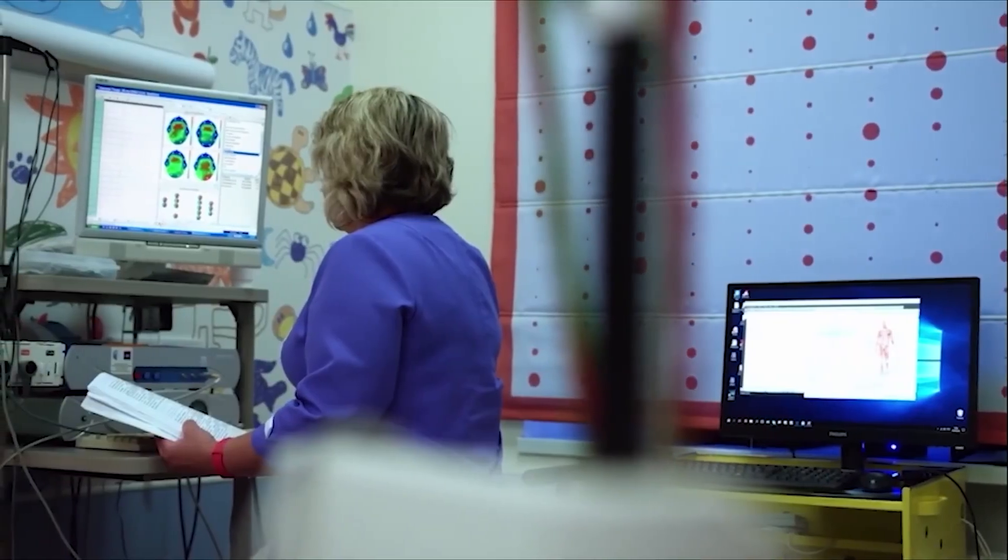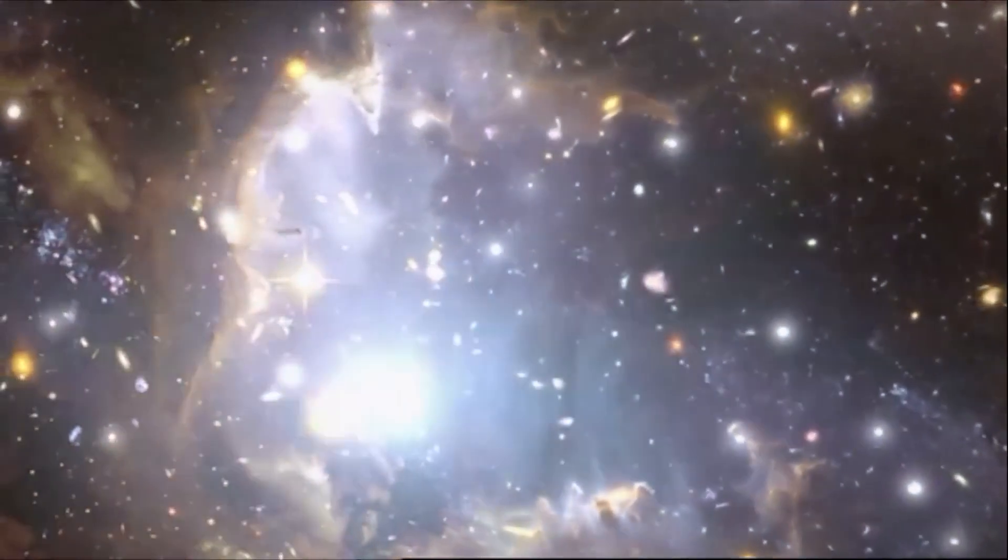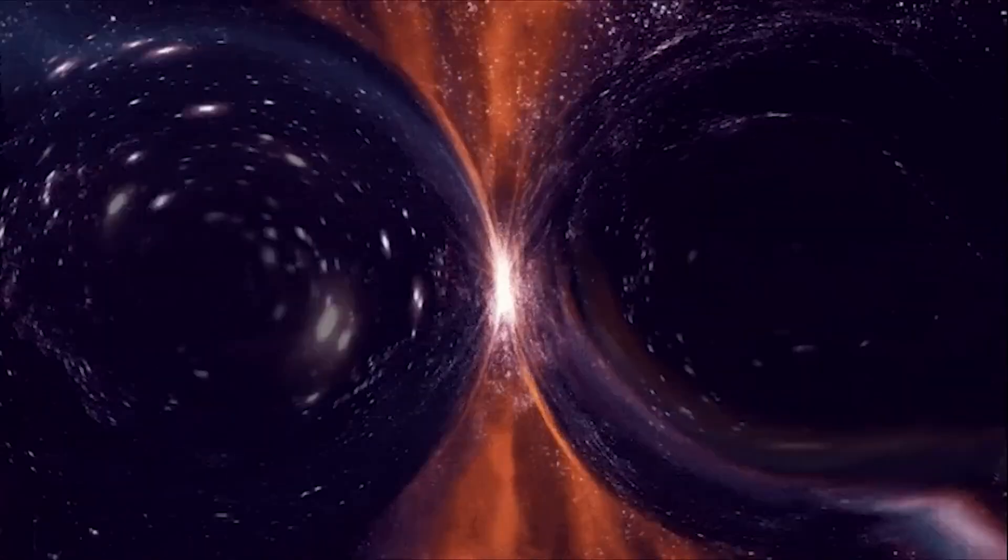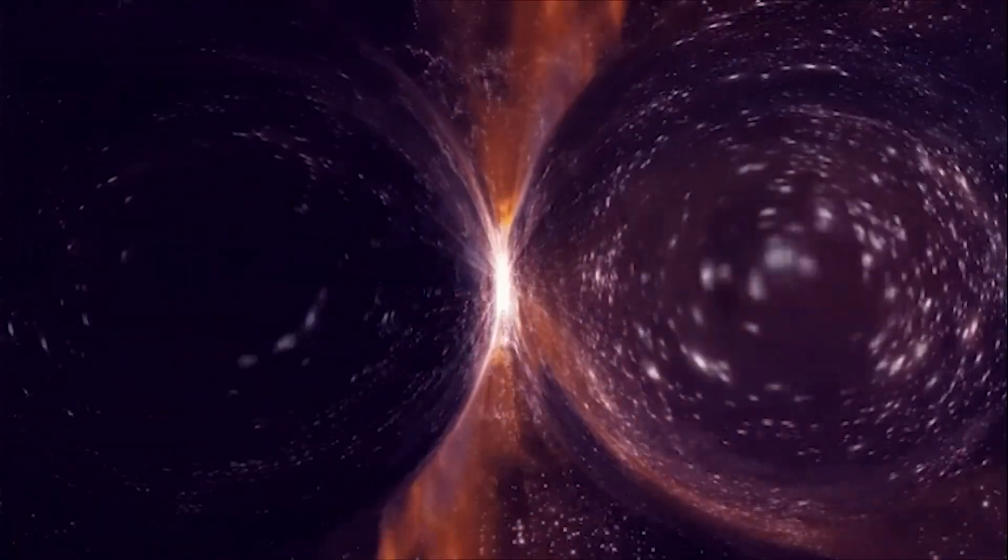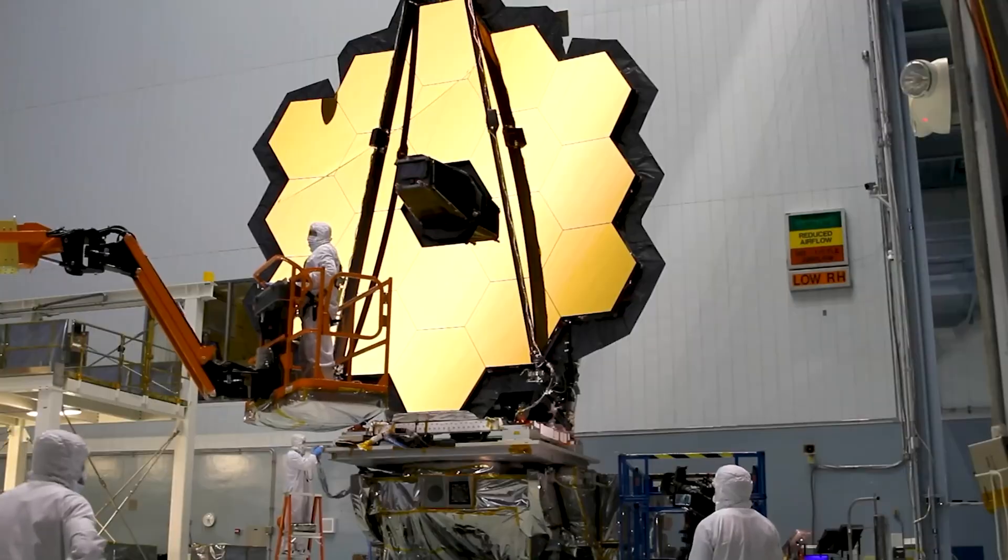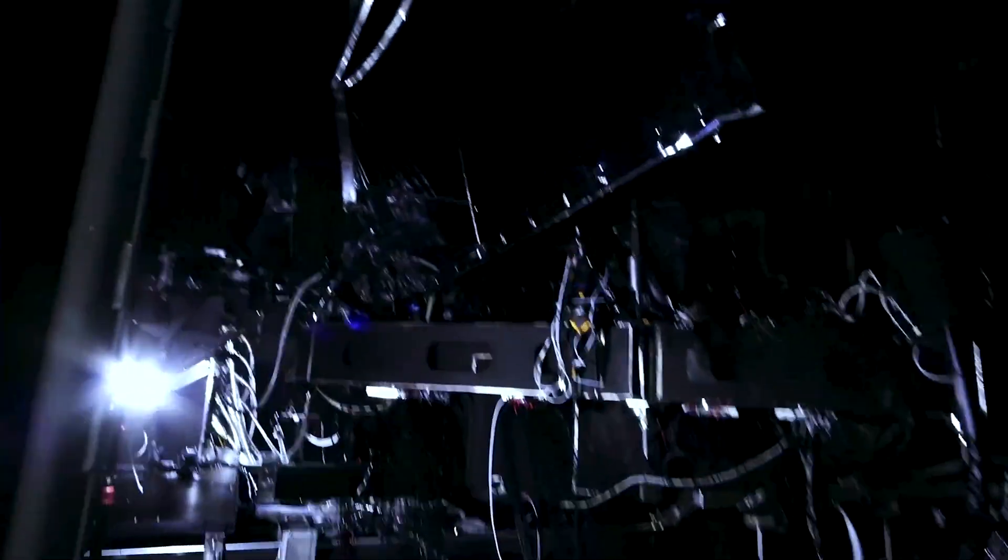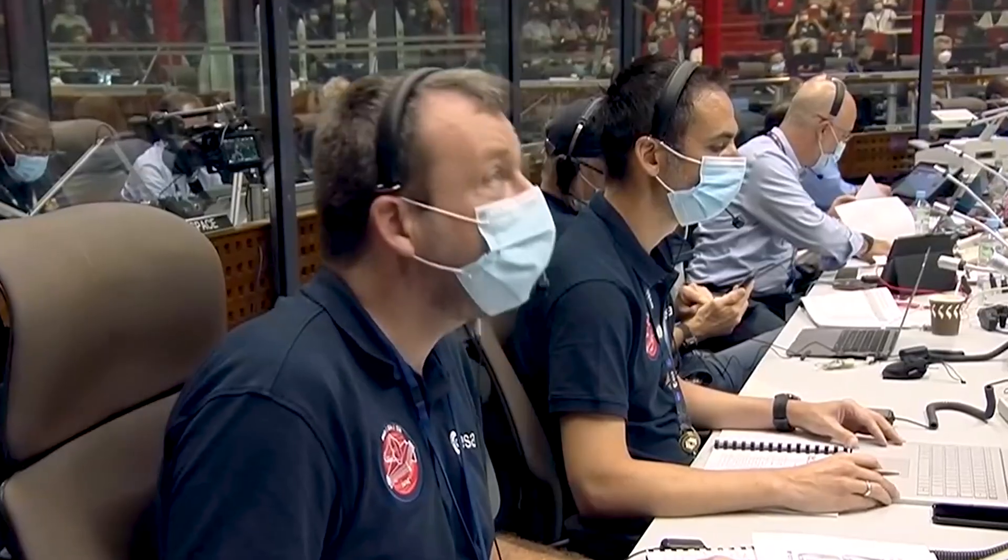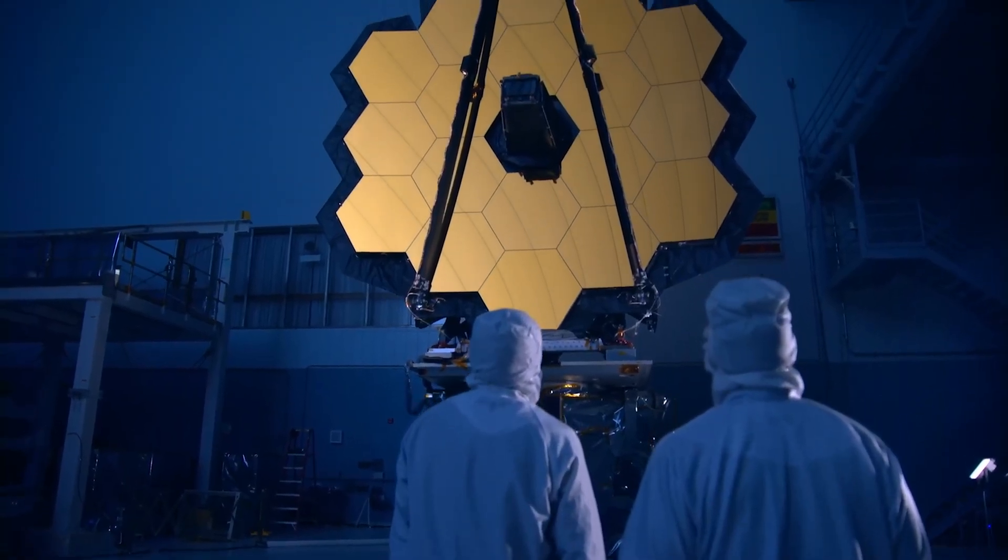Scientists figured there had to be some kind of cheat code, a tiny imbalance that helped matter win from the very beginning. But for years, they had no experimental proof. It was like trying to solve a billion-piece puzzle with almost all the pieces missing. We knew the final picture had to be us, but we had no idea how it happened. This matter-antimatter asymmetry problem has been one of the biggest challenges in all of physics.